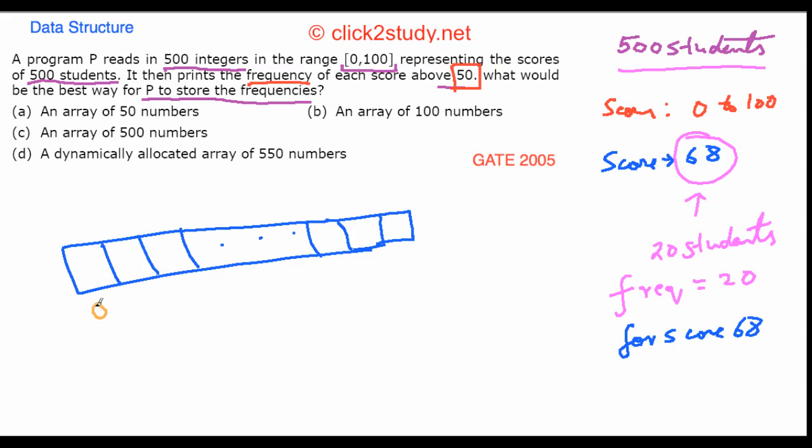The indices of the array are the scores. So index 0, index 1, index 2, up till index 99 and index 100. As you read these scores of 500 students, you can keep updating the frequency in these arrays.